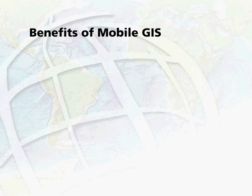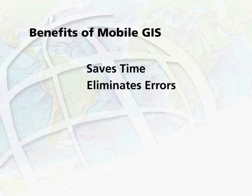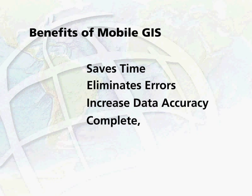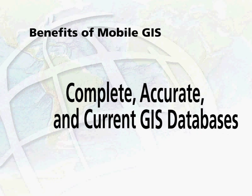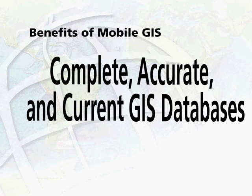The ability to bring geographic data into the field saves time, eliminates errors, and increases data accuracy. Most importantly, mobile GIS yields more complete, accurate, and current GIS databases on which analysis and decisions are based.